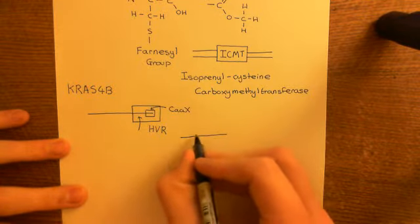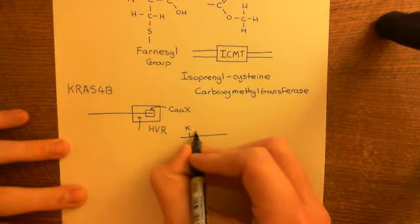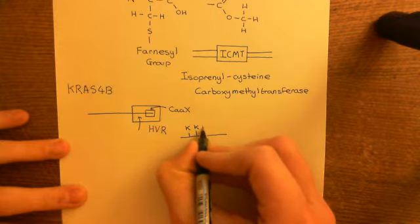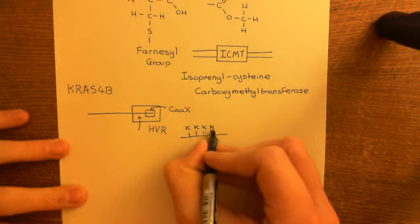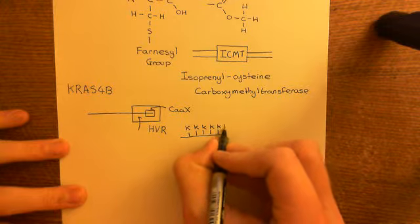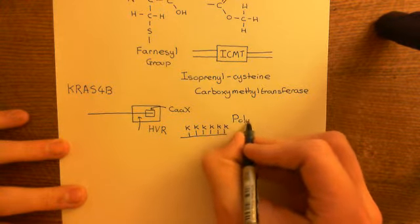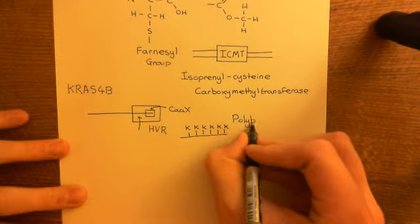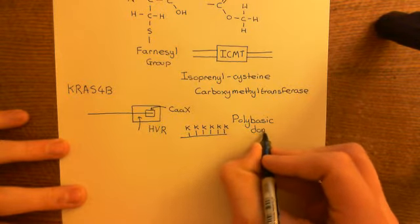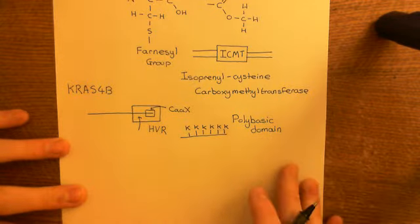You have six lysines all in a string, and the single-letter code for lysine is K. These six lysine amino acids all in a line form what is known as the polybasic domain of the KRAS-4B protein.